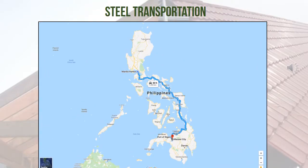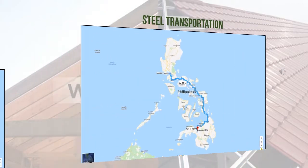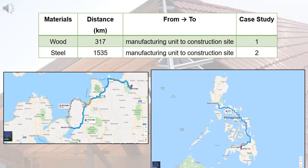Iron ore mines are located in Surigao Province, where raw materials are extracted and initial material processing was conducted. It is then transported to Davao, the nearest steel mill company in Mindanao Island. However, Steel Asia manufactures reinforcement bar only; thus, the only option is to source steel products from other areas. From Manila, steel products are transported to Marawi City, with land travel taking up to 33 hours of non-stop travel over a distance of 1,535 kilometers. For the transportation stages of the LCA studies, a Euro 3 freight lorry with 16 to 32 metric tons load capacity was considered.